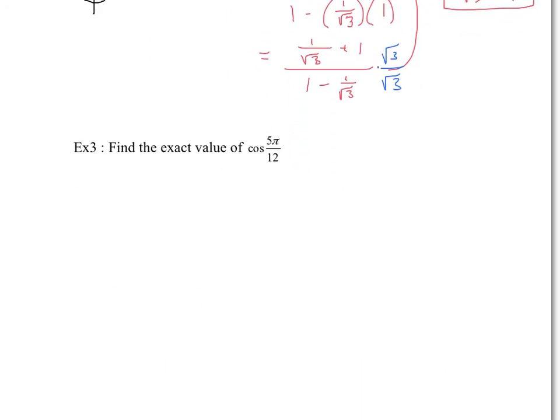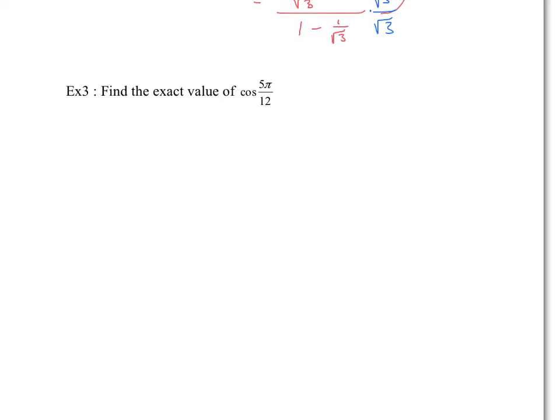Now find the exact value of cos of 5π/12, working with radians. Since the denominator is 12, I recommend converting all relevant radian values to twelfths: π/6 is 2π/12, π/4 is 3π/12, and π/3 is 4π/12. Notice that 2π/12 plus 3π/12 gives us 5π/12, which is what we need.